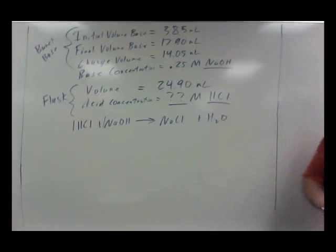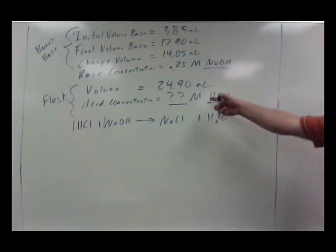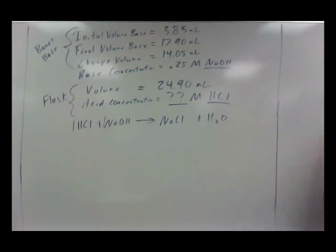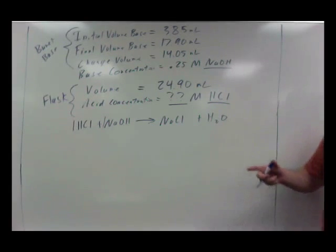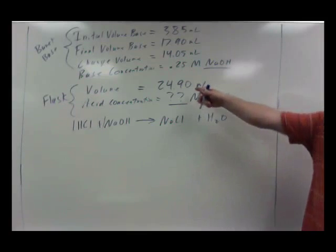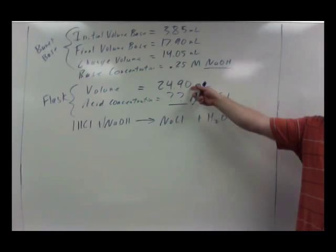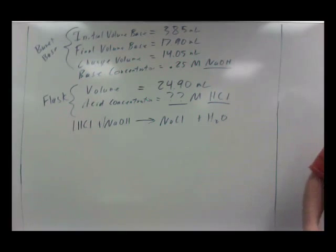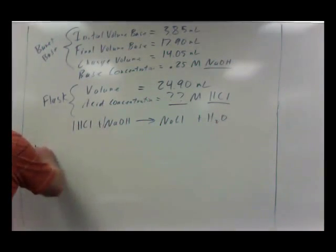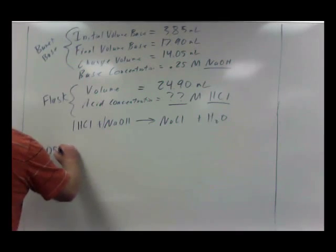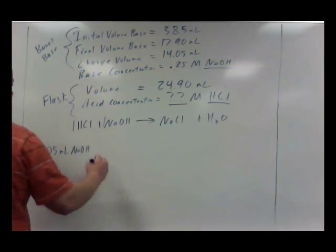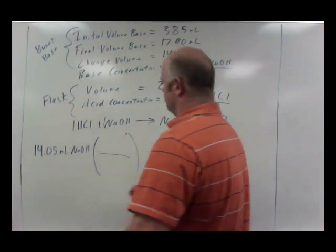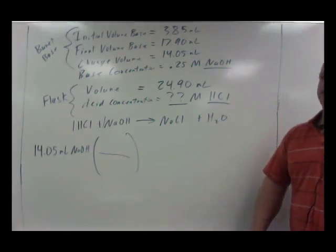And now we solve for concentration of hydrochloric acid, which essentially means solving for how many moles were there. Because we know the volume, so if we find the moles we can apply moles per volume and find concentration. So let's start with what did we use in the burette. Okay, so we have 14.05 milliliters of NaOH.